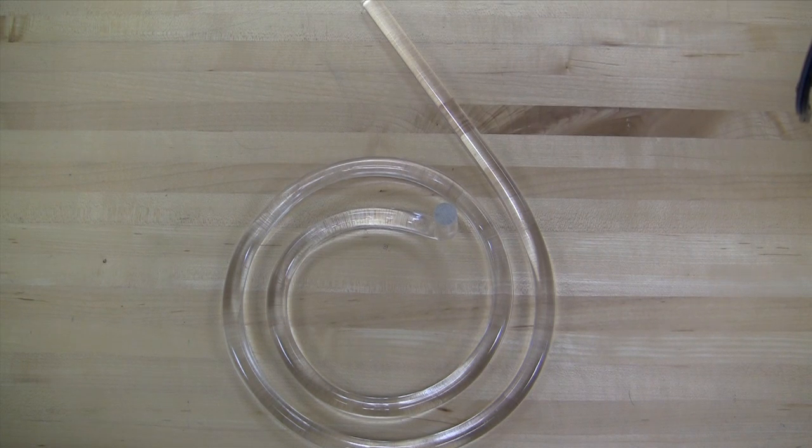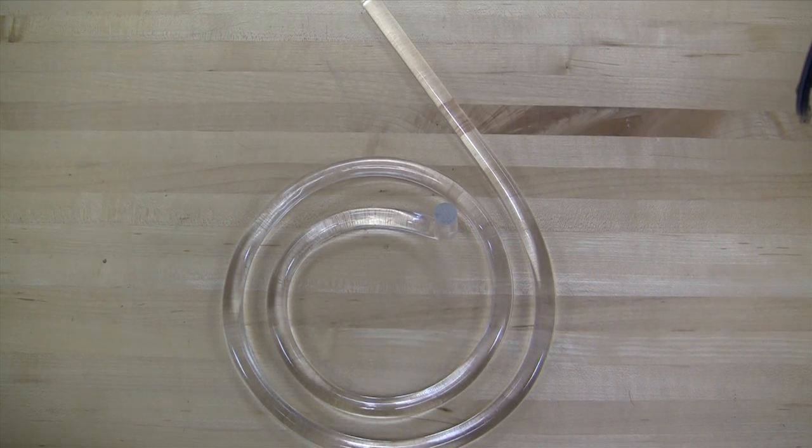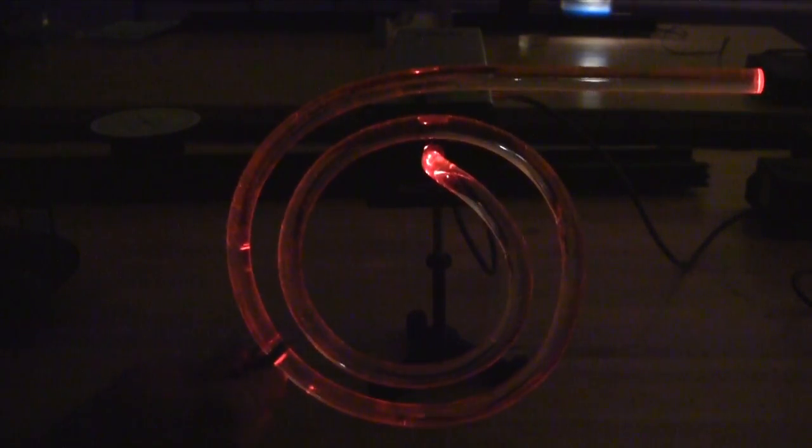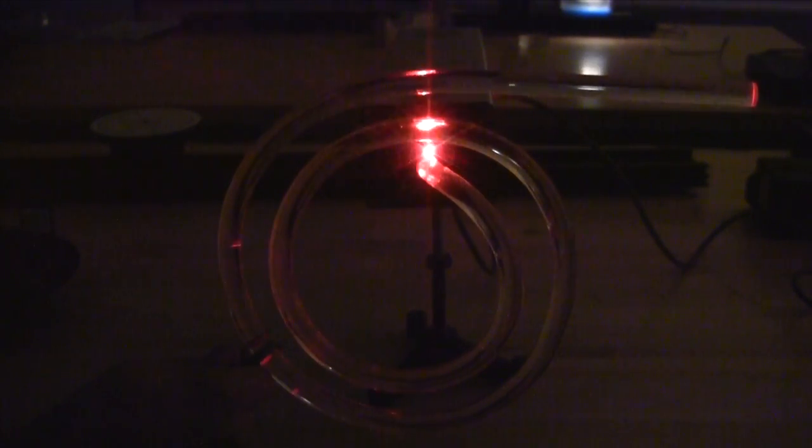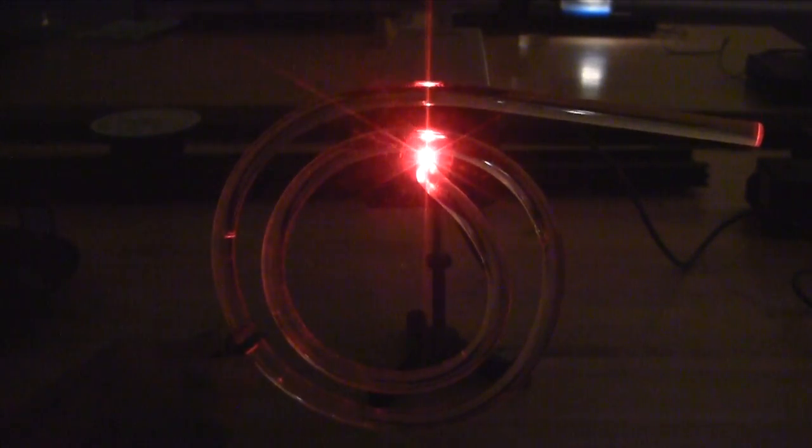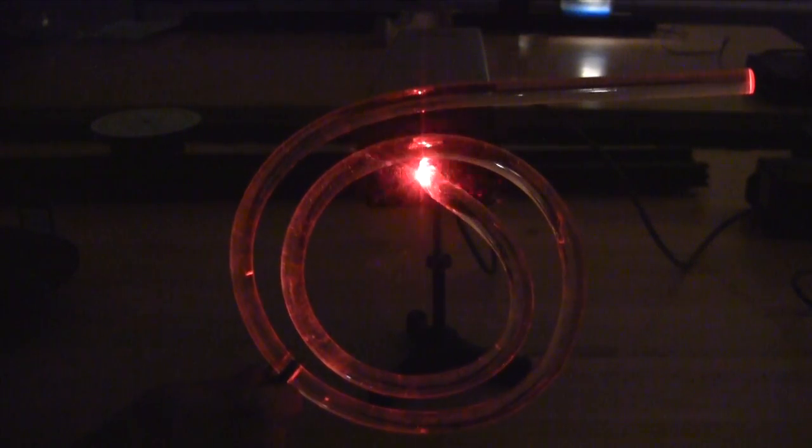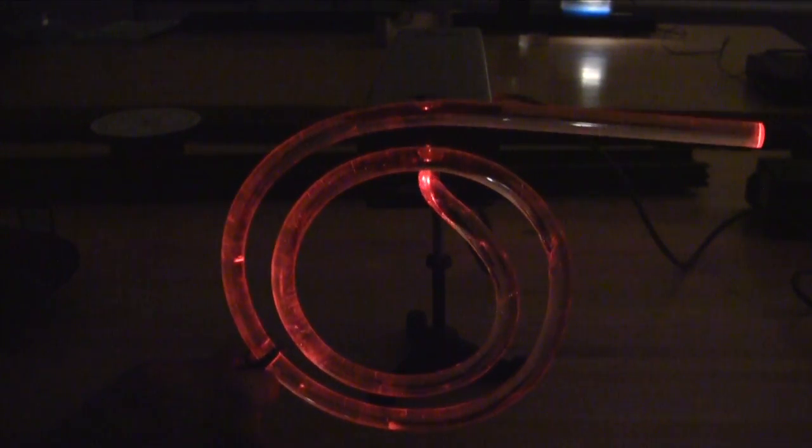The concept of total internal reflection is used in fiber optics which are used to transmit data over long distances. Here we have an optical light path of acrylic which helps demonstrate this concept. The light gets totally internally reflected through the light path and emerges out of the other end.